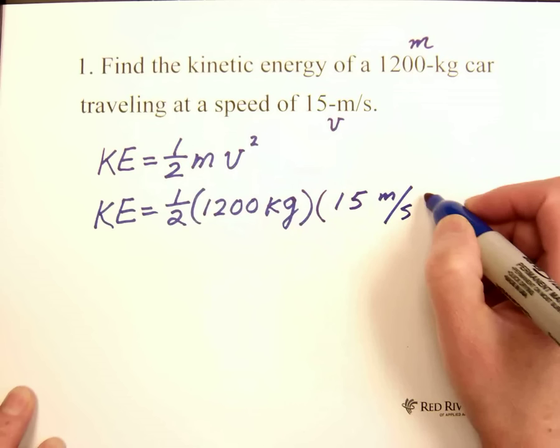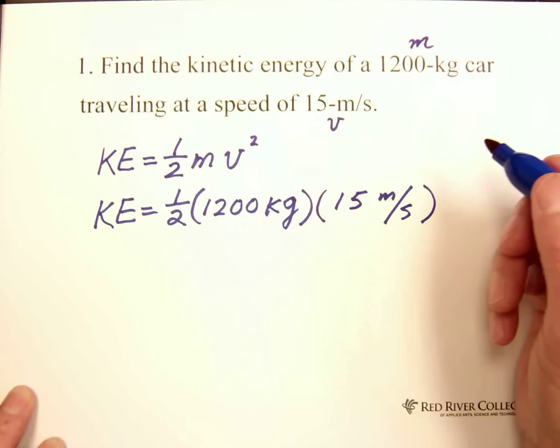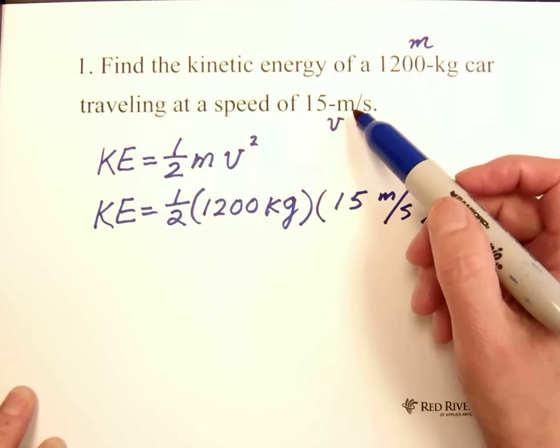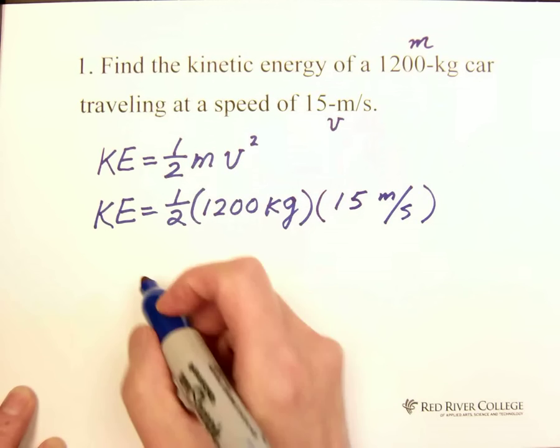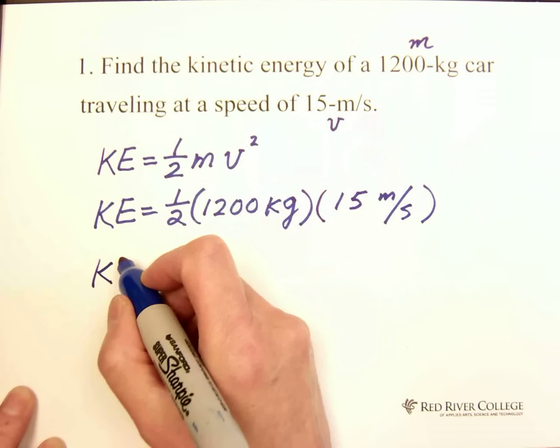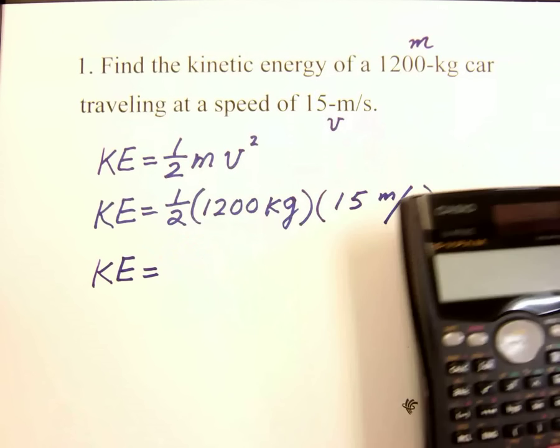Speed is 15 m per second. If you're given the speed is m per hour or km per hour, you need to convert to m per second. Calculate the kinetic energy, we need to calculate to get the answer.